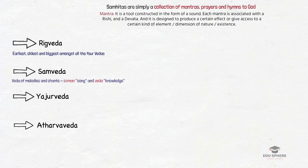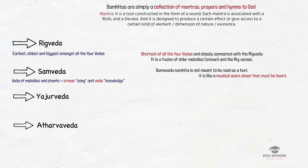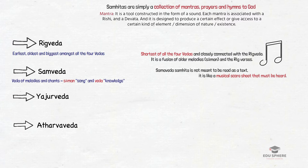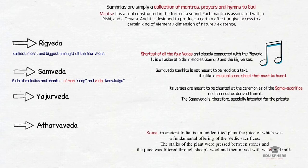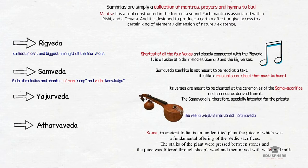Next is the Sama Veda Samhitha — the Veda of melodies and chants. This is the shortest of all four Vedas and is closely connected with the Rig Veda, being a fusion of older melodies and Rig verses. Sama Veda Samhitha is not meant to be read as a text; it is like a musical score sheet that must be heard. It is compiled exclusively for ritual application, as its verses are meant to be chanted at ceremonies. Our Indian music tradition, both in the north and the south, traces its origin to the Sama Veda.